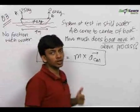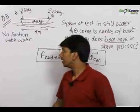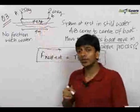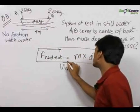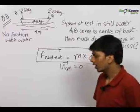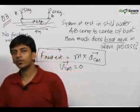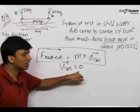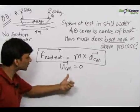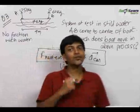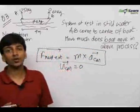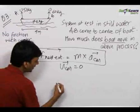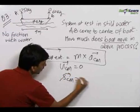When the acceleration of the centre of mass is 0, the velocity of the centre of mass will never change. Initially everything was at rest, so the initial velocity of the centre of mass, u_cm, was equal to 0. Since the acceleration is 0, the velocity does not change from this initial value, so the velocity of centre of mass always remains 0. When velocity of centre of mass is always 0, the displacement of centre of mass will also be 0.